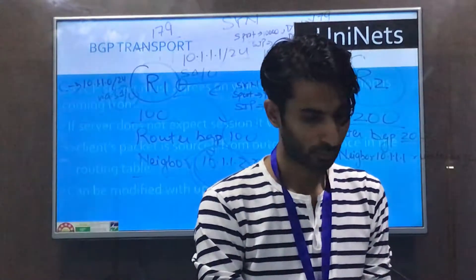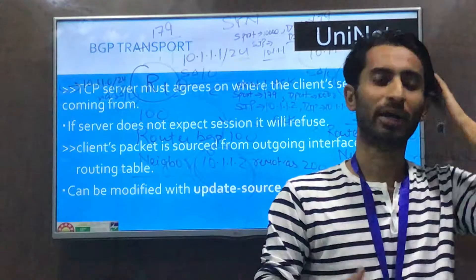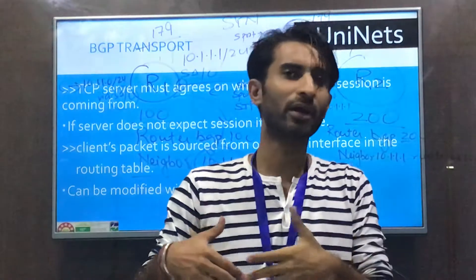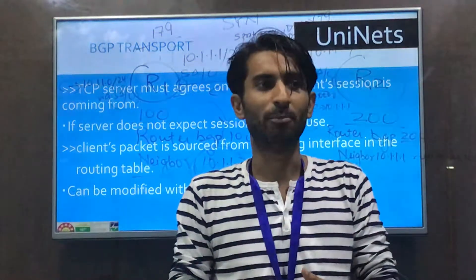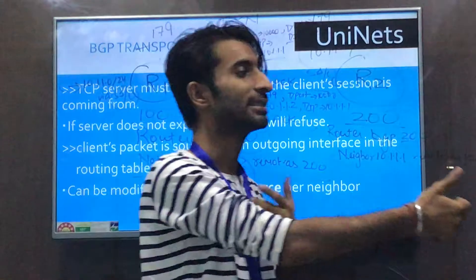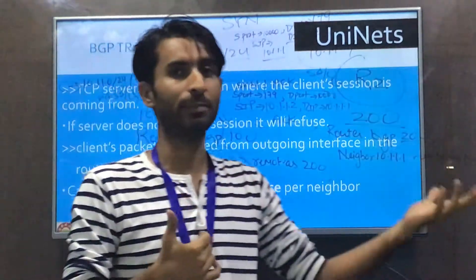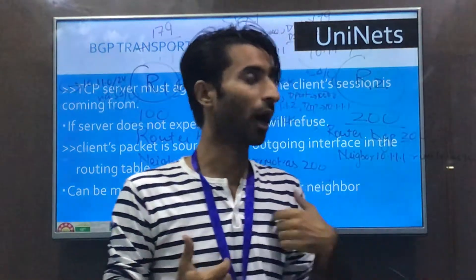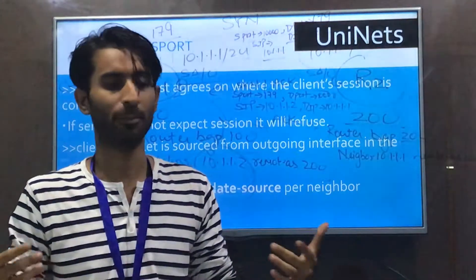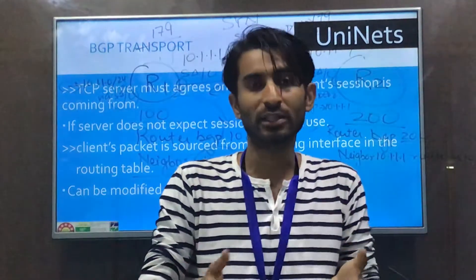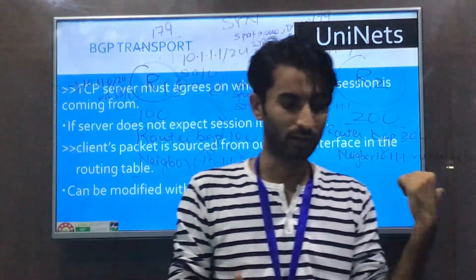As discussed, both routers must agree on the neighbor configuration. For example, if R1 is configured with neighbor 10.1.1.2 but the BGP messages are actually arriving from a different IP — say 20.1.1.x because a different exit interface is used — the neighborship will not come up. The router rejects the connection because it doesn't match the configured neighbor statement.